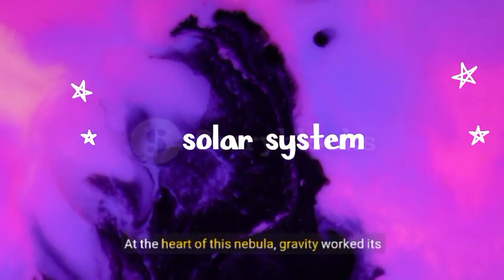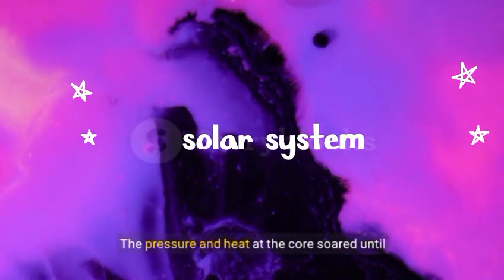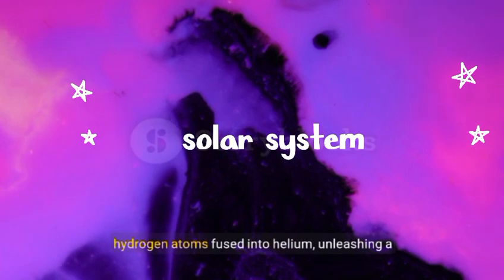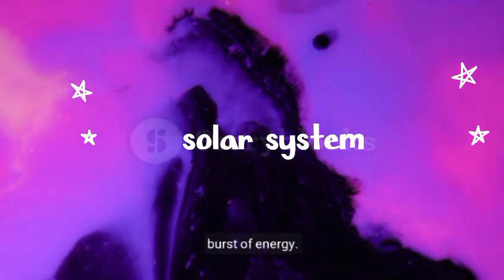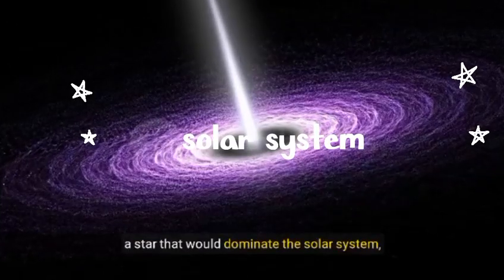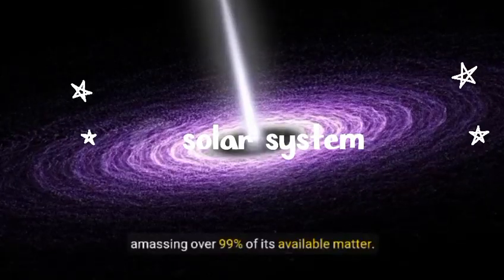At the heart of this nebula, gravity worked its magic, pulling more and more material inward. The pressure and heat at the core soared until hydrogen atoms fused into helium, unleashing a burst of energy. This powerful process marked the birth of our sun, a star that would dominate the solar system, amassing over 99% of its available matter.